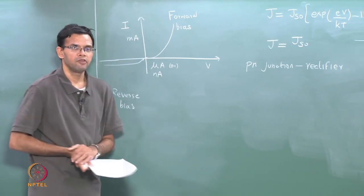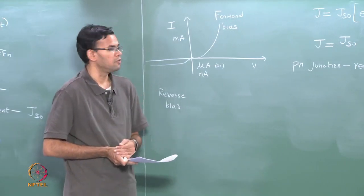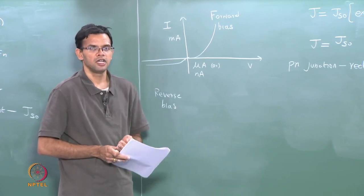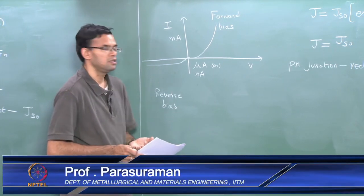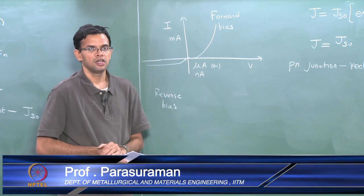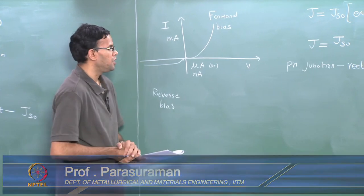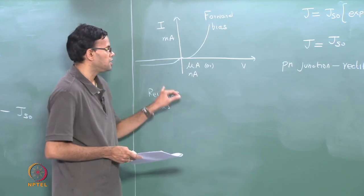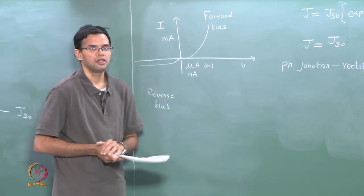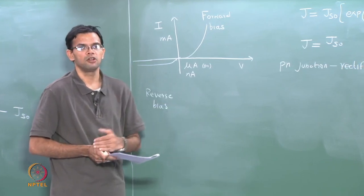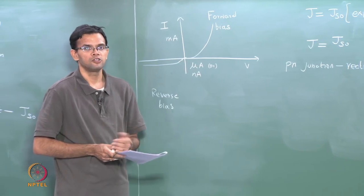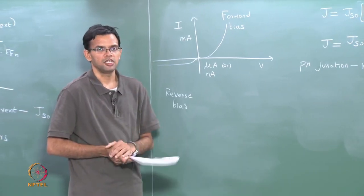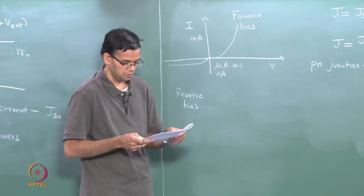Similarly, when we looked at a Schottky junction, we found that a Schottky junction is also a rectifier — it will conduct in the forward direction but not in the reverse. The difference between a PN junction and a Schottky junction is that the reverse saturation current for a PN junction is much smaller. Later we will also look at some examples where we will compare a Schottky junction and a PN junction.